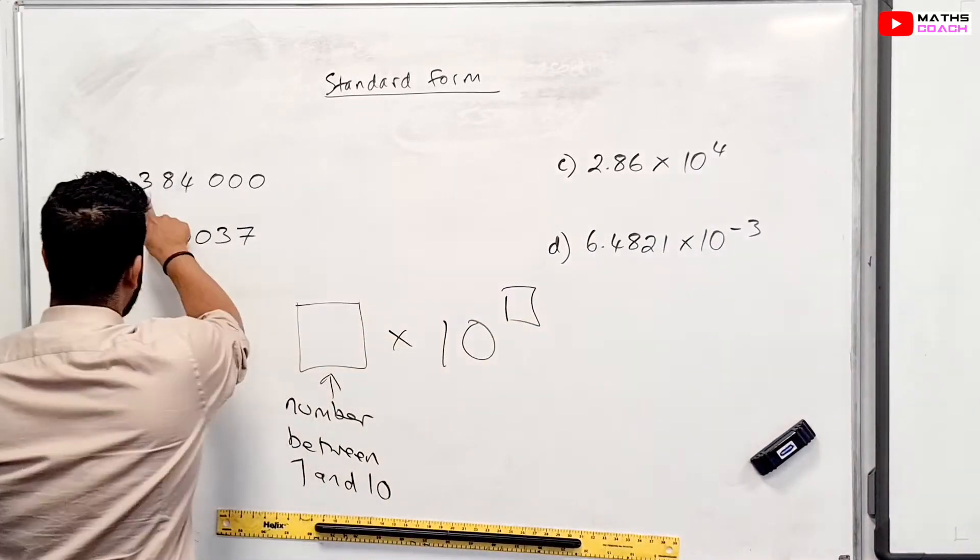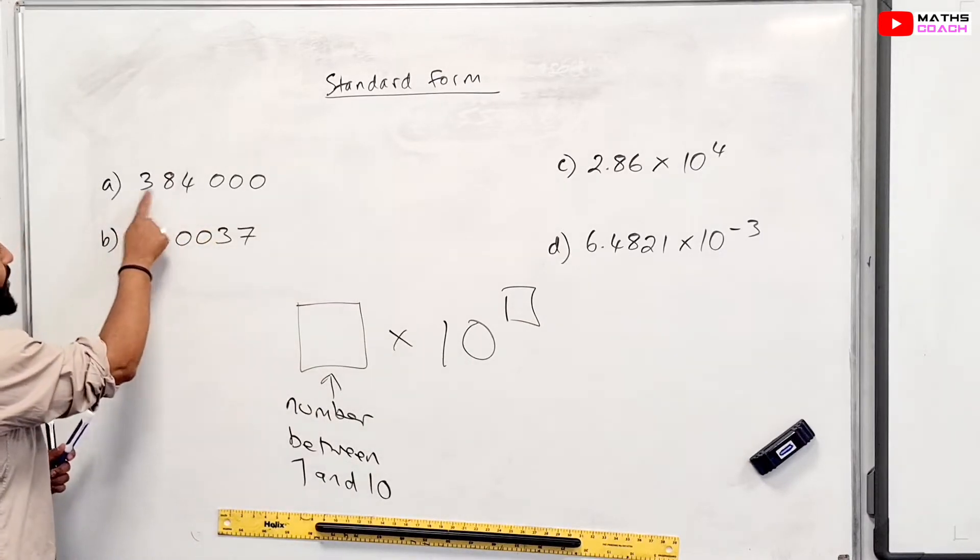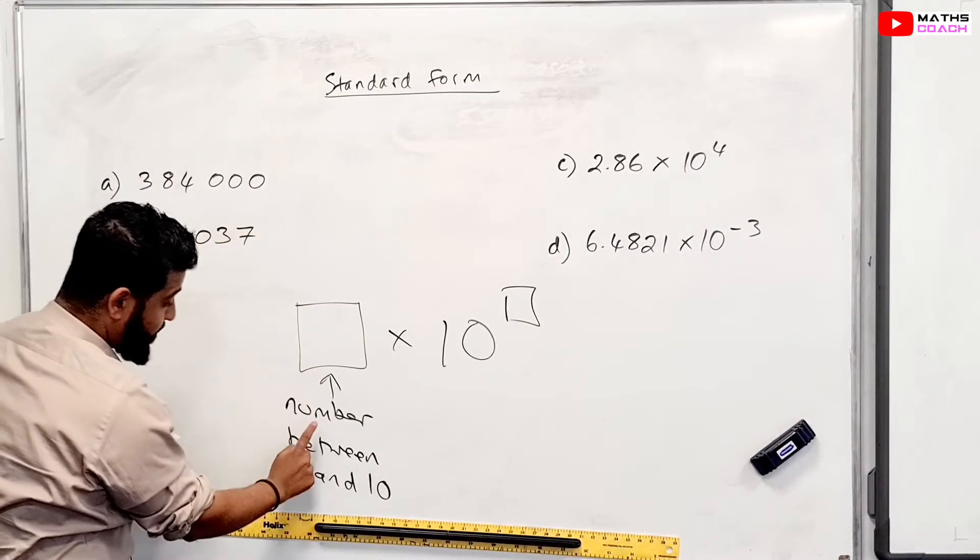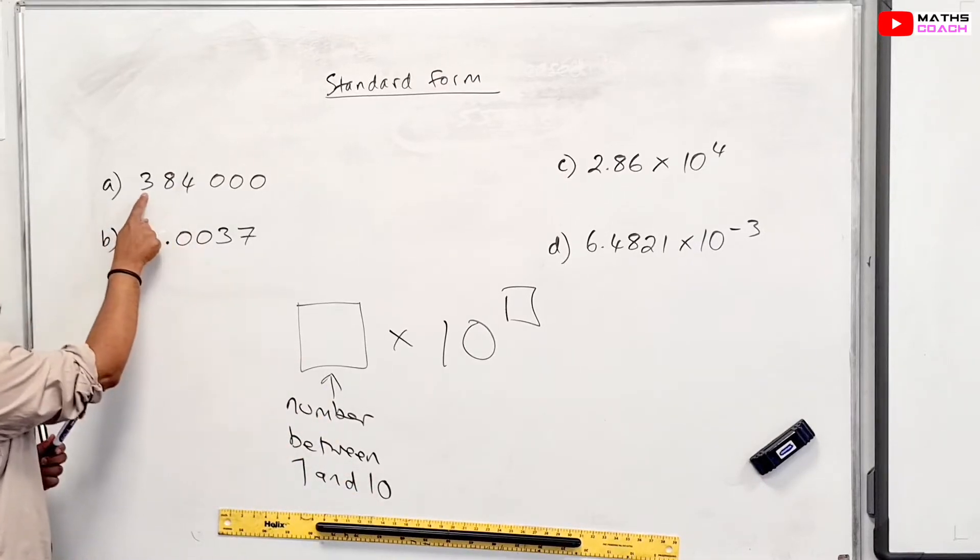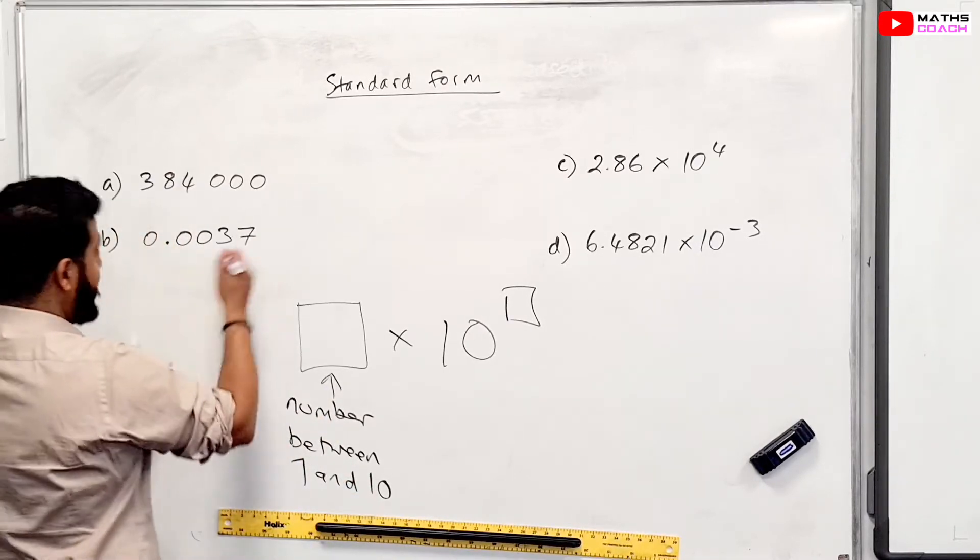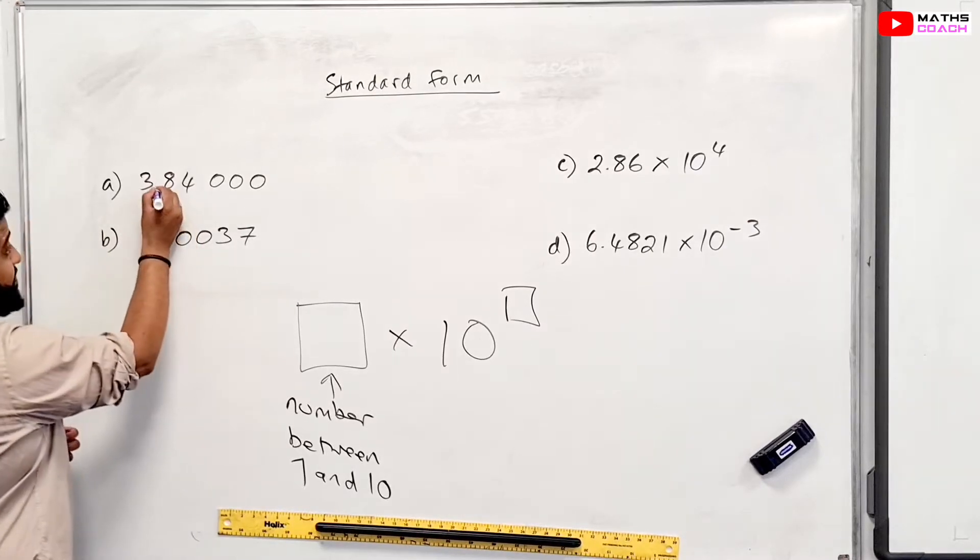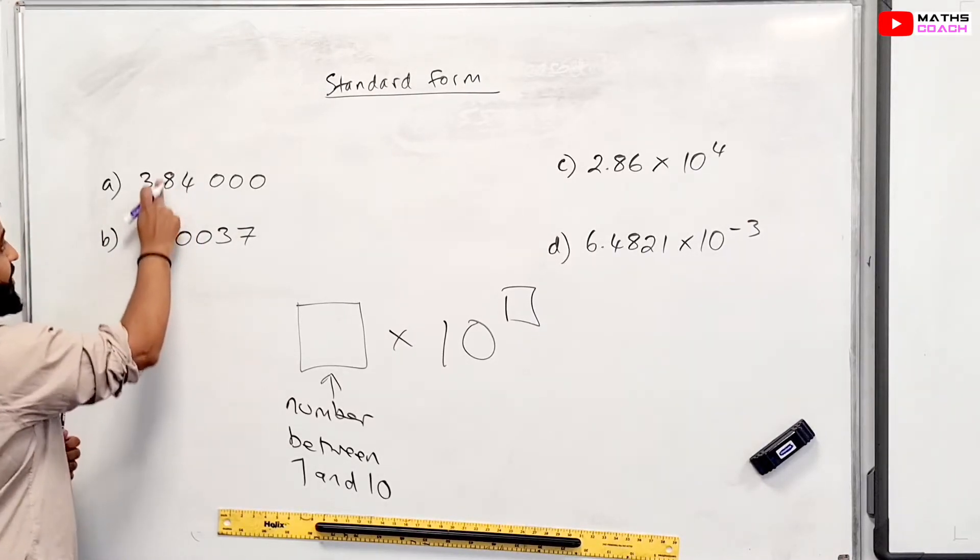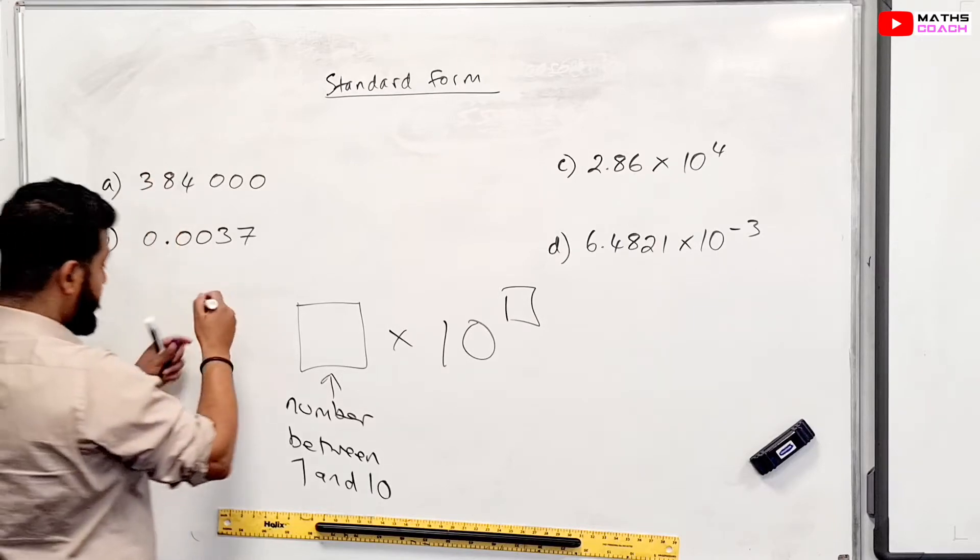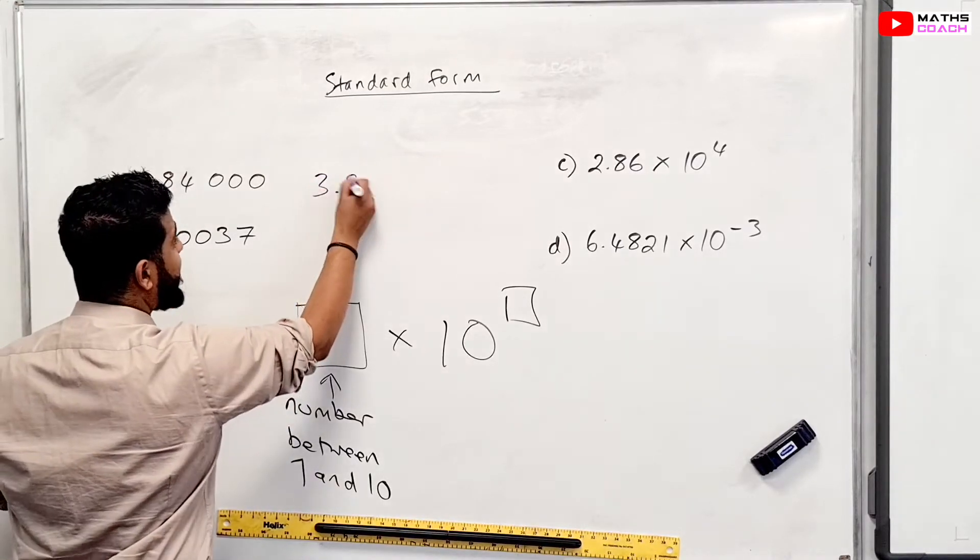So if we have a look at this number here, we've got 384,000. So of course, our number has to be between 1 and 10. So we're going to only have to have 3 here. So to have 3 here, we will basically put a decimal point right there. Obviously, we're not going to do it here. This is just for demonstration purposes. So we're going to have 3.84.